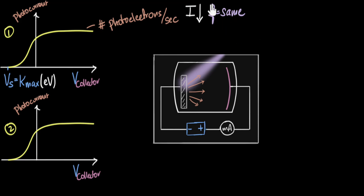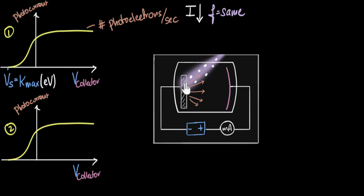Let's start with the frequency part. Since the frequency is staying the same, the energy of my photons is going to stay the same — because of Planck's equation, E equals H times F. So if the energy of the photons hasn't changed, the energy given to the electrons hasn't changed, and the maximum kinetic energy will stay the same. So I know my graph is going to end at the same stopping voltage. I'll draw my new graph in green.